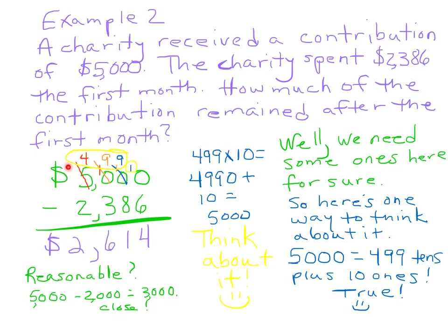You see up here where it says 499 — it looks like 499 right there. What I want you to see is that 499 times 10 is 4,990, and if I add these ten ones right here, I end up with 5,000. That's how we can do this. There are faster ways, but I want you to think about it — that's why I've written it out. 5,000 equals 499 tens plus ten ones. It's very, very true.